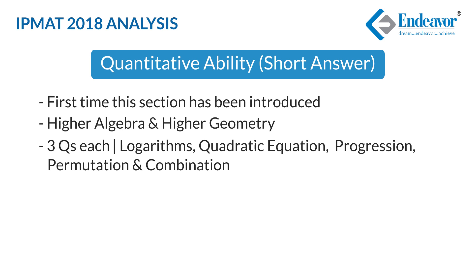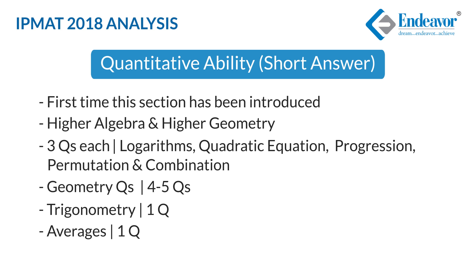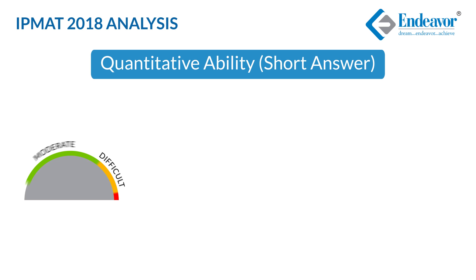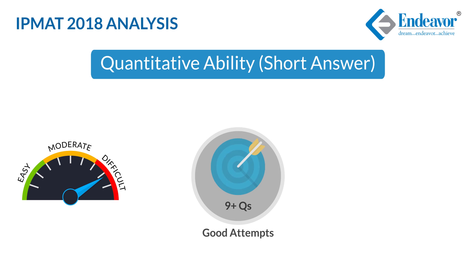An online calculator was provided, which could have given some respite to students. This section also had very good quality geometry based questions — around four to five questions on geometry, one on trigonometry, and one on averages. Except for the trigonometry question, the rest were word problems with lengthy calculations and multiple concepts. Since 12th board students typically tackle one concept at a time, facing such multi-concept questions would have been very difficult. Therefore, 9 plus is considered a good attempt within 40 minutes, and a net correct of 5 plus is a good score.